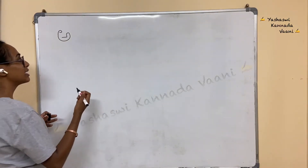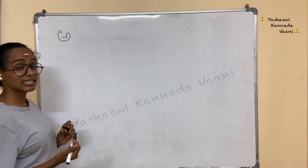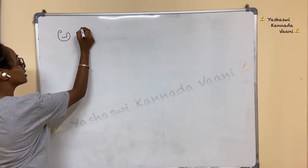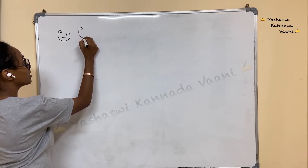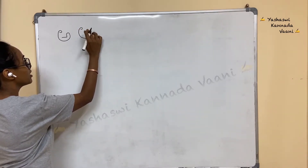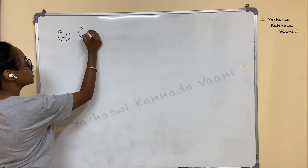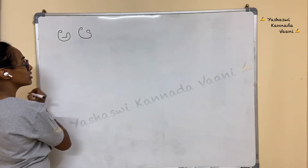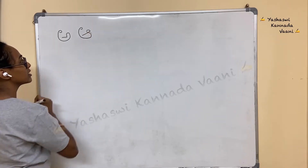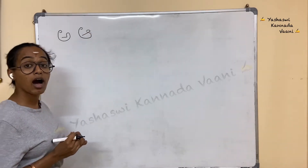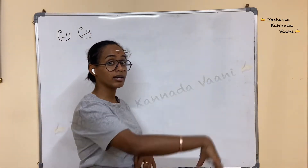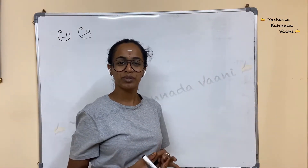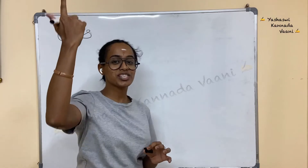Okay? Next, we'll go for the next letter. Next letter is A (ಆ). Very good. Start with the same type, with the small circle. Come down, stop here. Go inside. Yes, small circle. Come inside. This is your A (ಆ). Aane — Aane is elephant. Arya — Arya is a name. Akasha — Akasha is the sky.